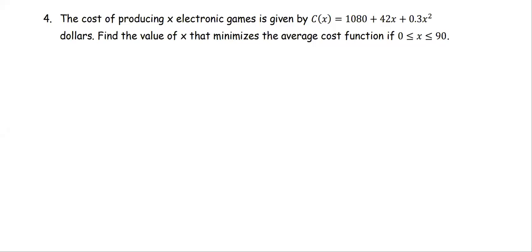In this example, the cost of producing x electronic games is given by C(x) = 1080 + 42x + 0.3x² dollars. We need to find the value of x that minimizes the average cost function, where x is between 0 and 90. The function is polynomial and is a continuous function on the given closed interval [0, 90].